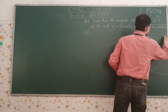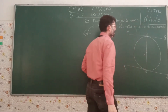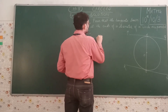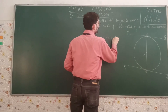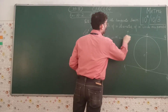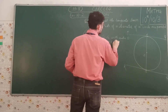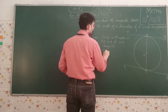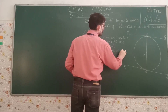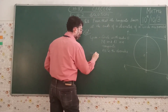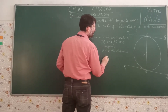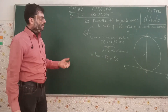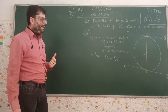Let us name the tangents PQ at point A and RS at point B. We need to prove PQ is parallel to RS. Given: a circle with center O; PQ and RS are tangents; AB is the diameter. By theorem 10.1, OA is perpendicular to PQ, so angle OAP = 90 degrees. Similarly, OB is perpendicular to RS by theorem 10.1, so angle OBS = 90 degrees.